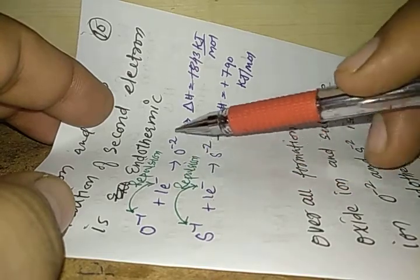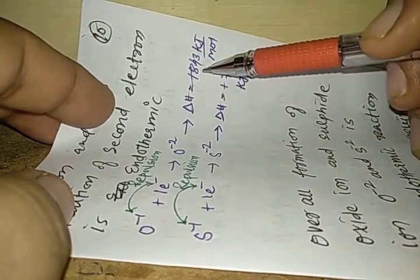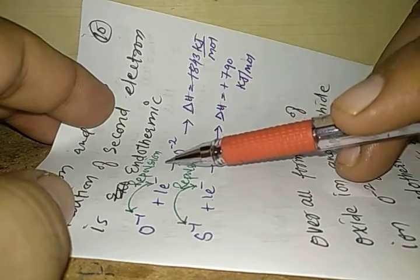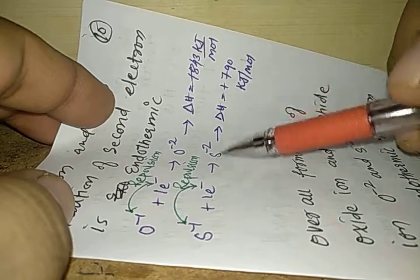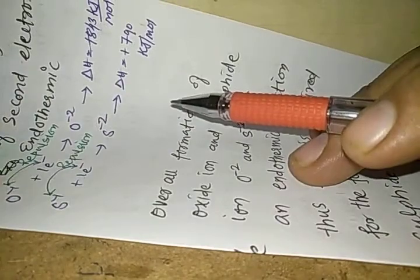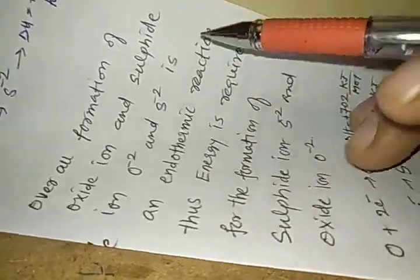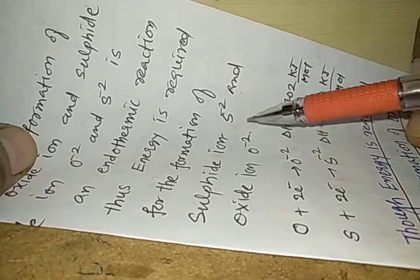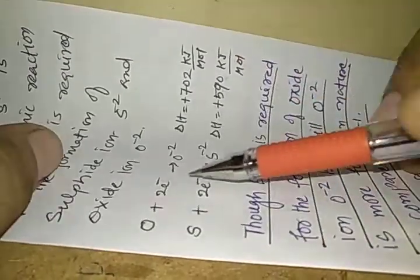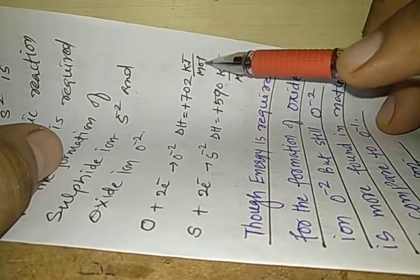Ultimately, when O minus 2 and S minus 2 are formed, we need to provide energy from outside. For the formation of O minus 2, 843 kilojoule per mole energy is provided from outside. For S minus 2, plus 790 kilojoule per mole energy is required for addition of the second electron. Overall, formation of the oxide ion O minus 2 and sulfide ion S minus 2 is an endothermic reaction, with delta H equal to plus 702 kilojoule per mole for oxygen.